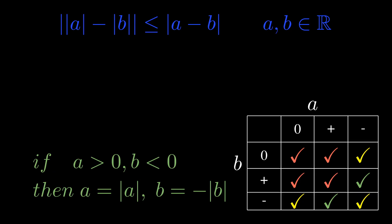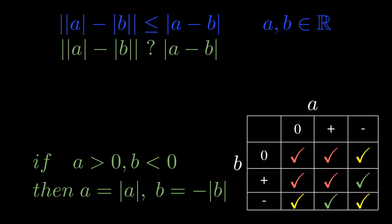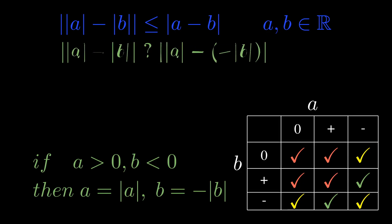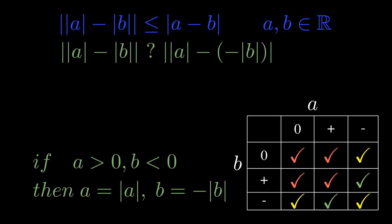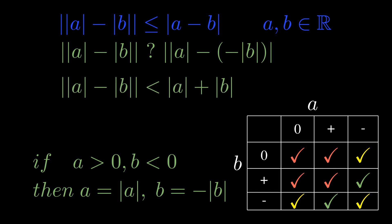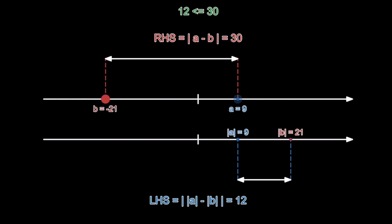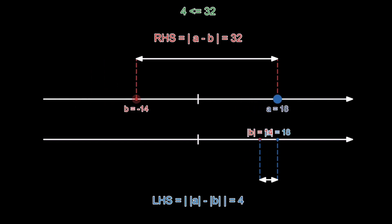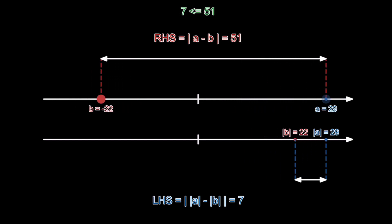Now if you substitute those two into the right hand side of the inequality, you will come up with simply the absolute value of a minus the negative of absolute value of b. Of course, the two negatives cancel and we get a positive. Visually and numerically, this is exactly the same thing as the previous example.